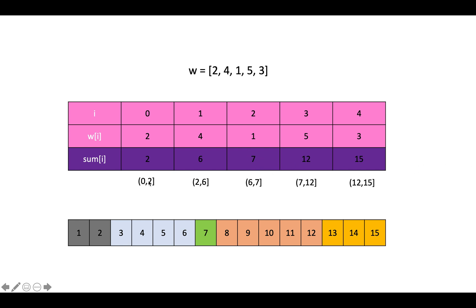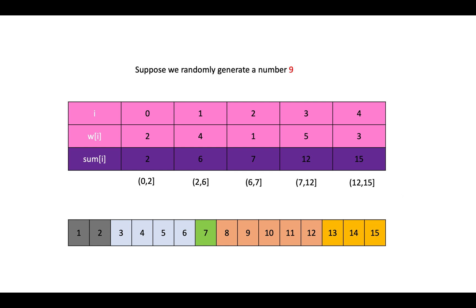We add 2, 4, and 1 which gives 7, and so on. So if we choose a number from 1 to 15: if we choose a number from 0 to 2 it means the index we choose is 0; if we choose a number from 2 to 6 it means the index we choose is 1, and so on. Suppose we randomly generate a number from 1 to 15, which is 9. What index should we choose? Because 9 falls in the range 7 to 12, the index we should return is 3.